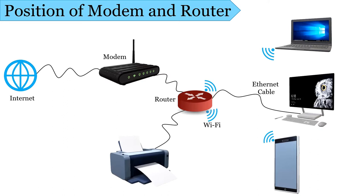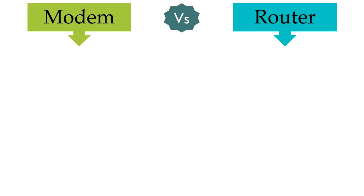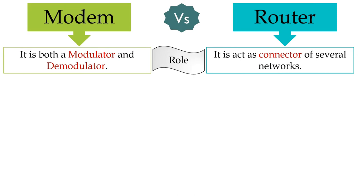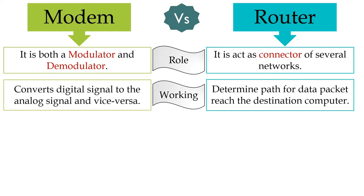Knowing modem and router in detail, now let us discuss the differences between them. A modem modulates and demodulates the signal between your computer and your internet service provider, whereas the router is a device that connects multiple networks together. When you upload something from your computer on the internet, a modem converts the digital signal to an analog signal of the telephone line, and performs just the opposite while downloading. A router, on the other hand, analyzes the data packet and determines the physical address in the destination field of that packet, and routes it to its final destination.